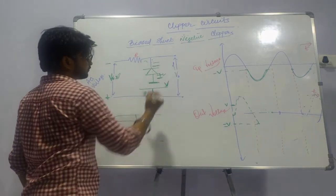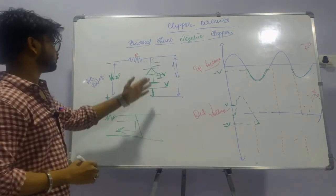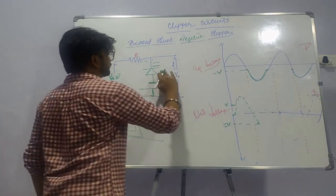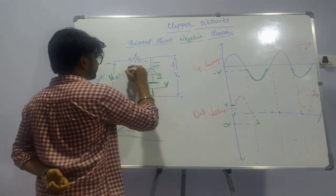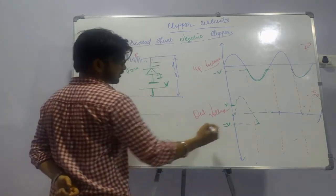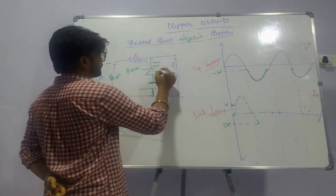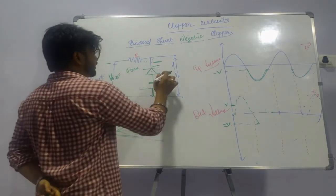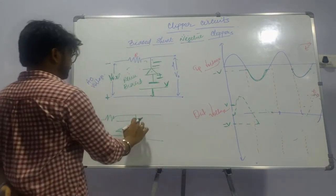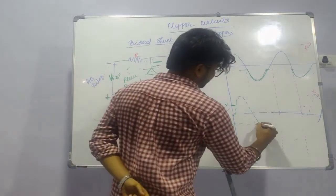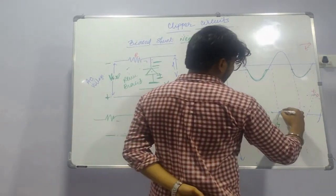Until it reaches the minus V value it remains non-conducting because it is in forward bias condition for Vi, as the negative is connected to the negative terminal of the diode. The current does not pass till it reaches the value V, where the negative of Vi becomes greater than that of V and it becomes reverse biased. Under reverse bias the diode behaves as open circuit and conducts again until it reaches minus V, and the process continues.